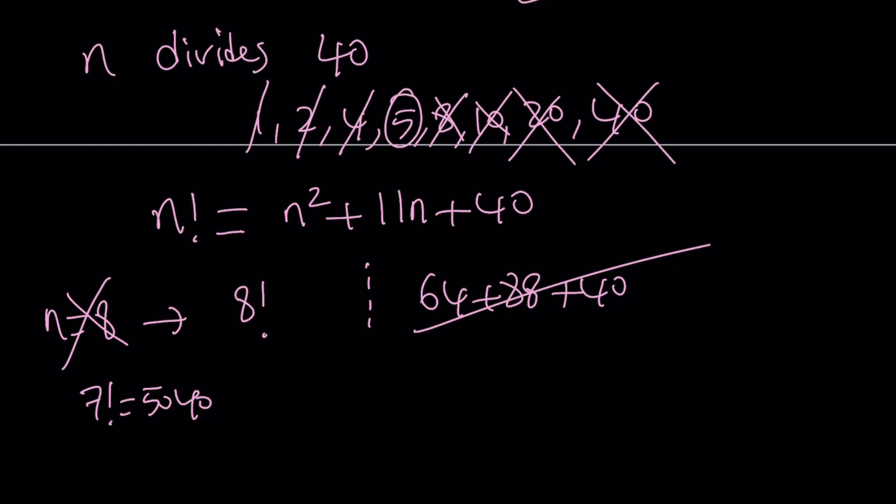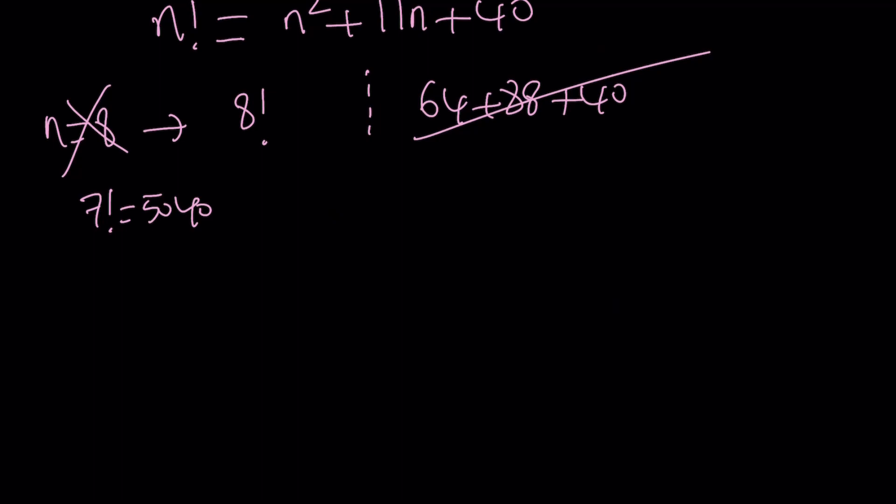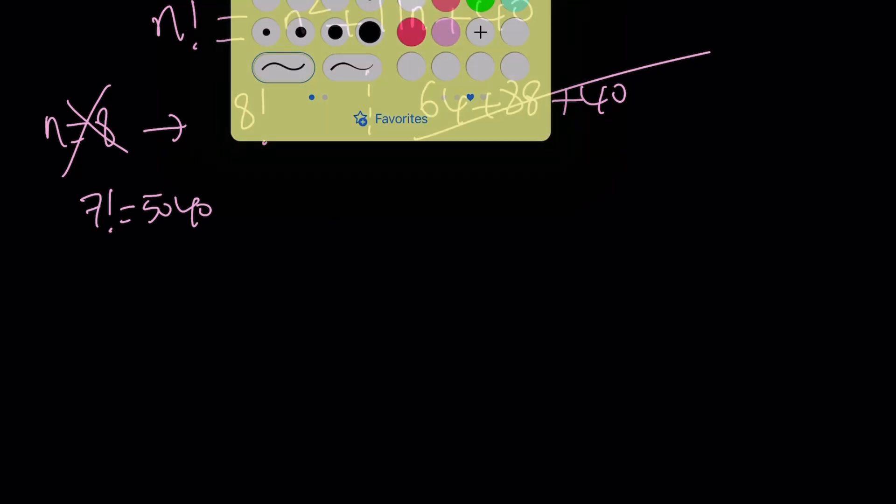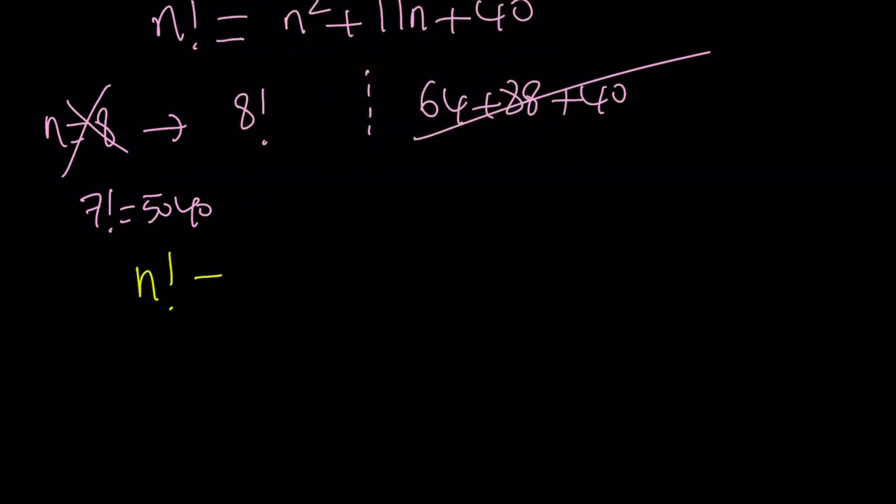But let's go ahead and check if 5 works. So let's test 5 out. We have n factorial. I'm going to replace n with 5. I have 5 factorial, which is equal to 120. On the right-hand side, I have 5 squared plus 11 times 5 plus 40, which is equal to 25 plus 55 plus 40.